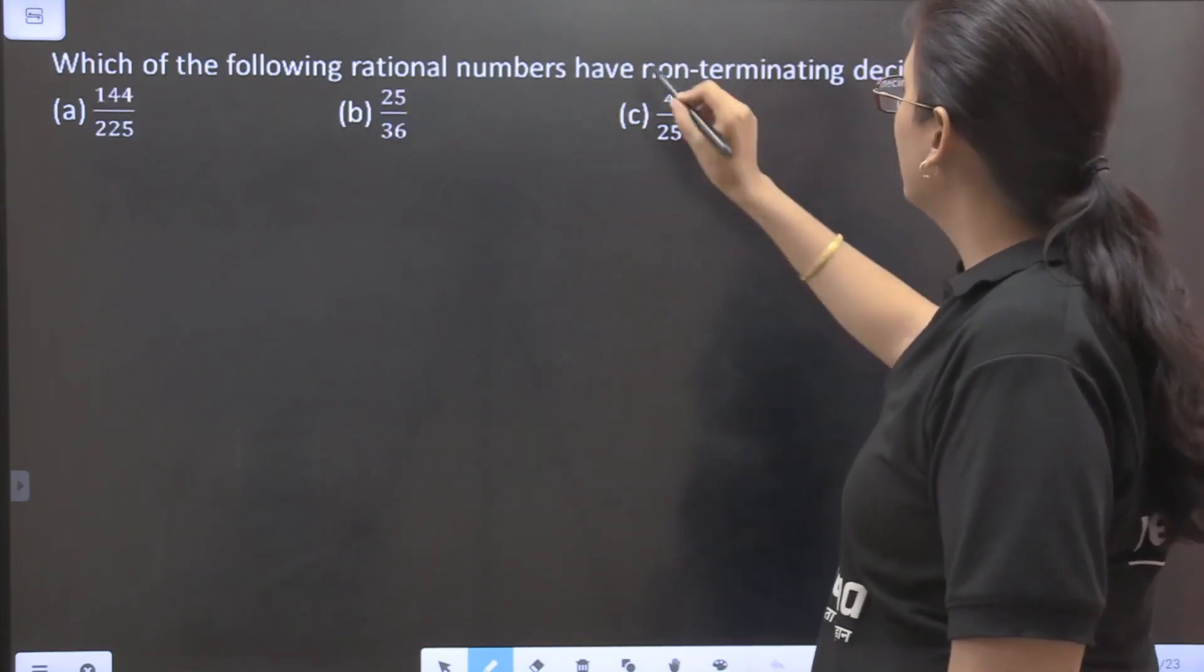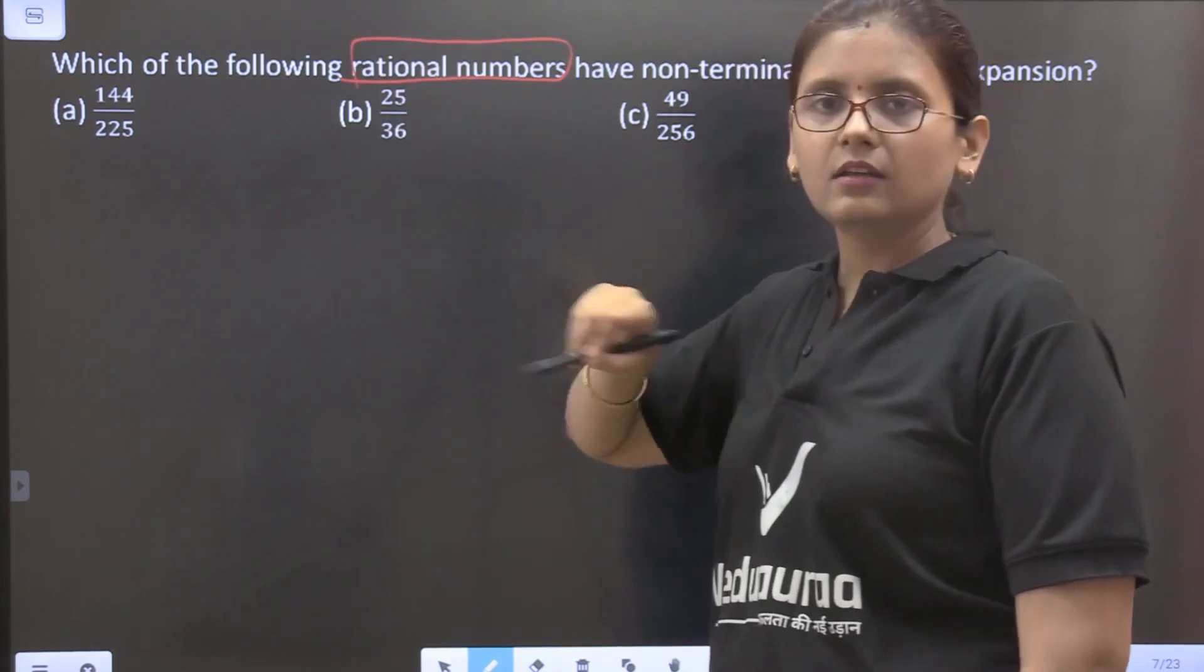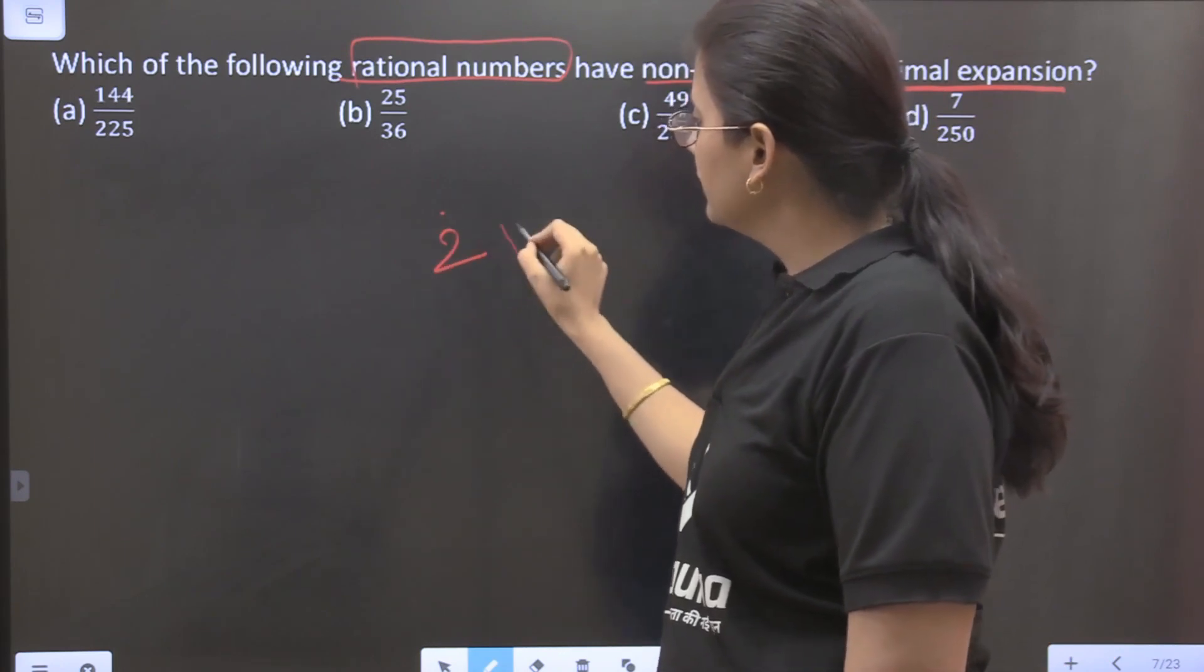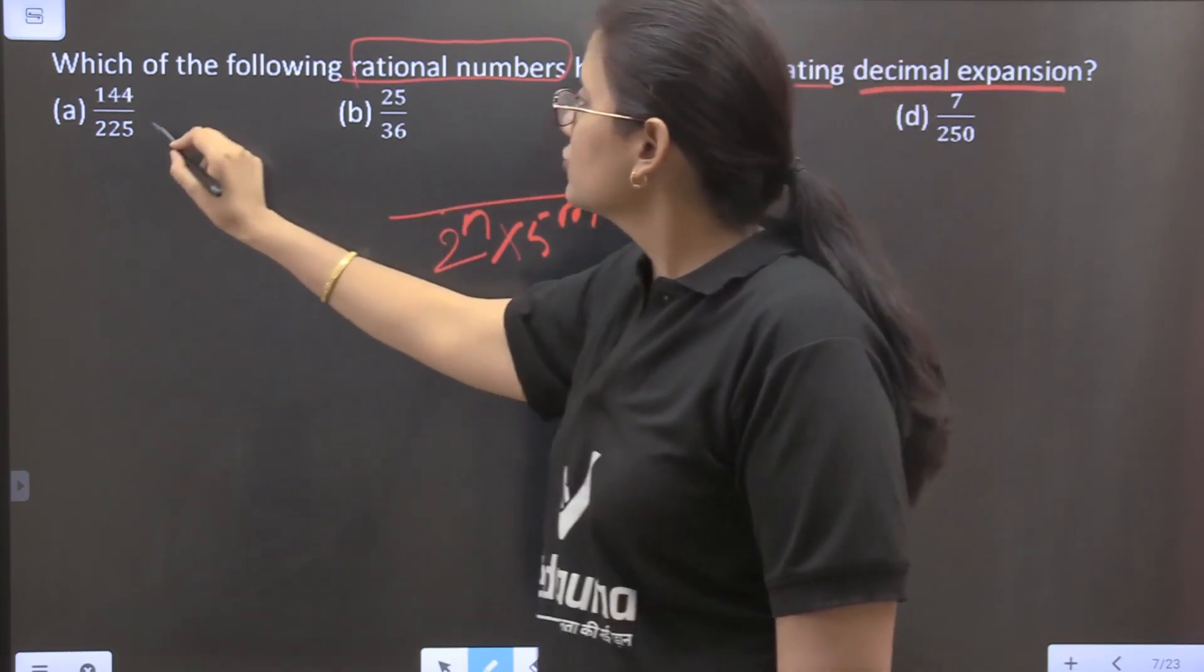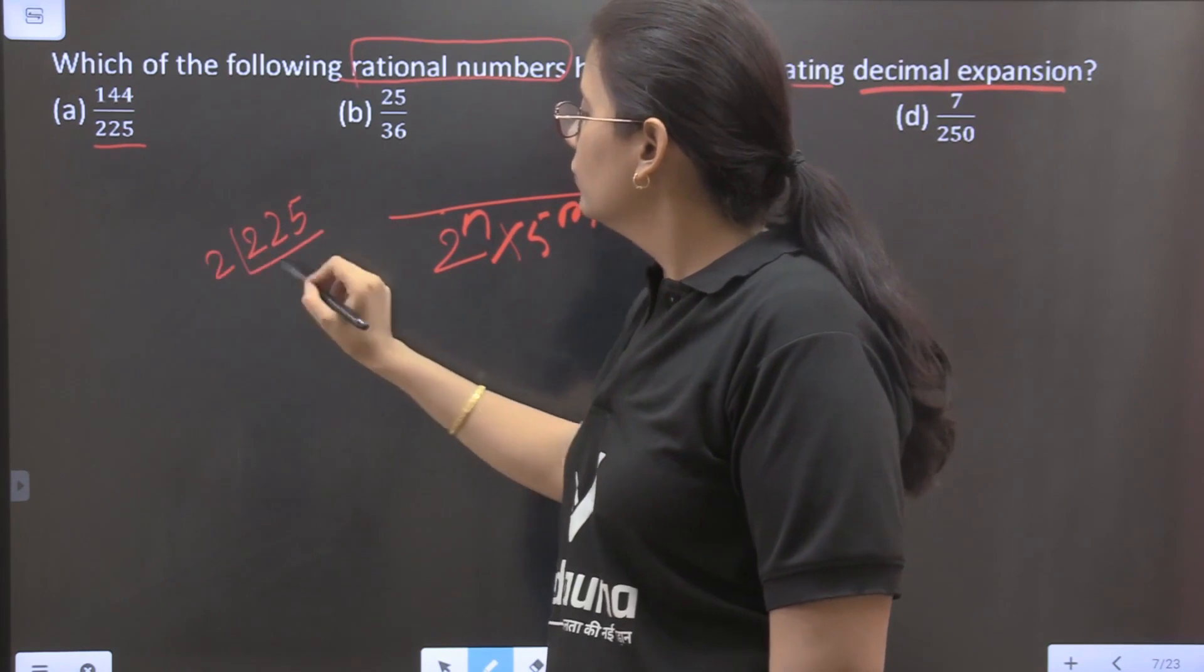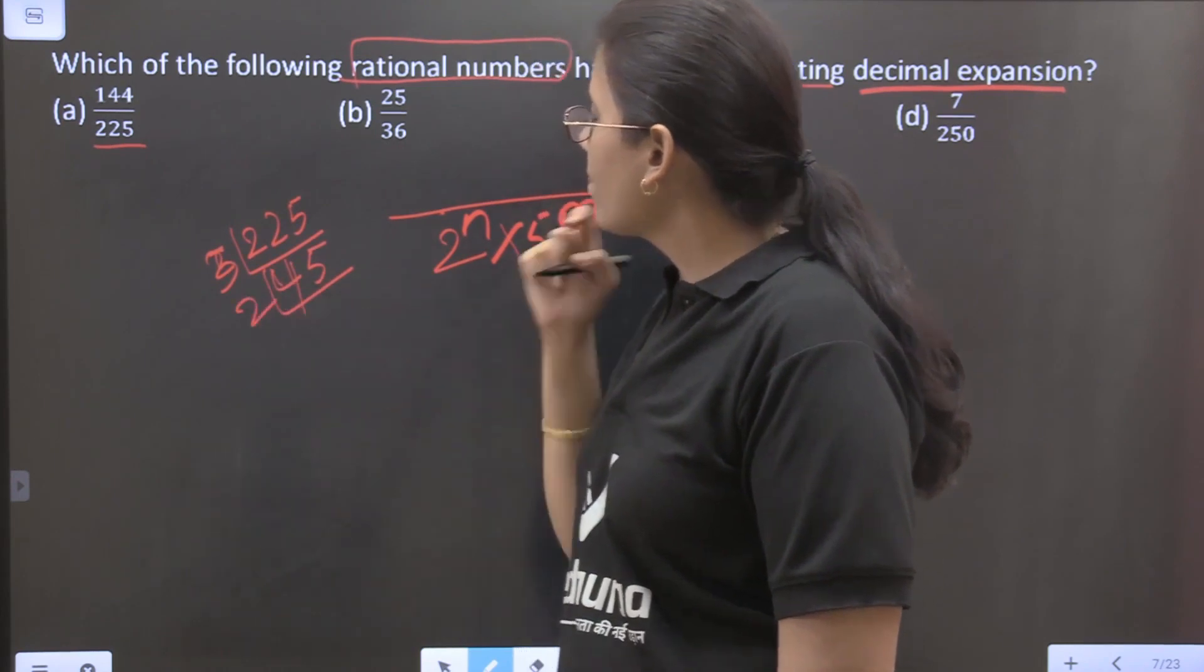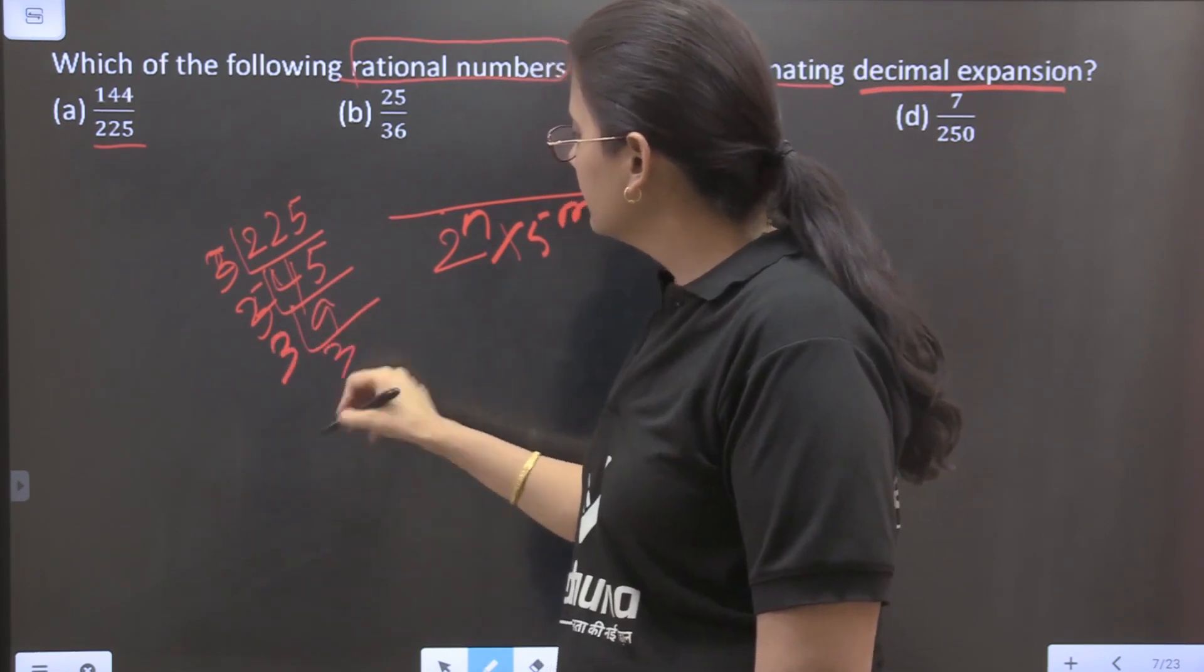Now coming to the next question. Which of the following rational numbers have non-terminating decimal expansion? That means the number is rational, all are in the P by Q format, but they have non-terminating decimal. That means their denominator should have something except 2 and 5 as prime factors. Now first one is 225: so 225 will have 5, 45, 9, then again this is 3, 3, 5 by 3, 3.